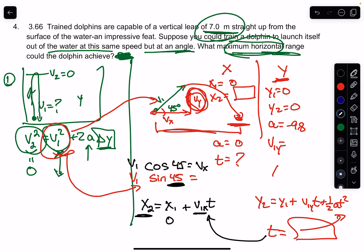But since it's 45 degrees, it's the same number. It's an equilateral triangle. Plus one half AT squared. Now remember, in the X direction, acceleration is zero. So it's just going to be this equation, and you can find its maximum horizontal range. We call this the range.